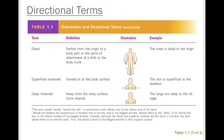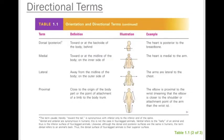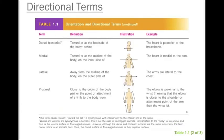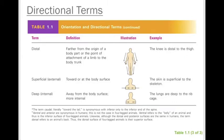Take the time to become very familiar with these twelve terms. Superior: toward the head. Inferior: away from the head. Anterior or ventral: toward the front of the body. Dorsal or posterior: toward the back of the body. Medial: toward the midline. Lateral: away from the midline. Proximal: close to the heart. Distal: further away from another body part, the trunk, or the heart. Superficial: toward the external surface. Deep: toward the internal surface.